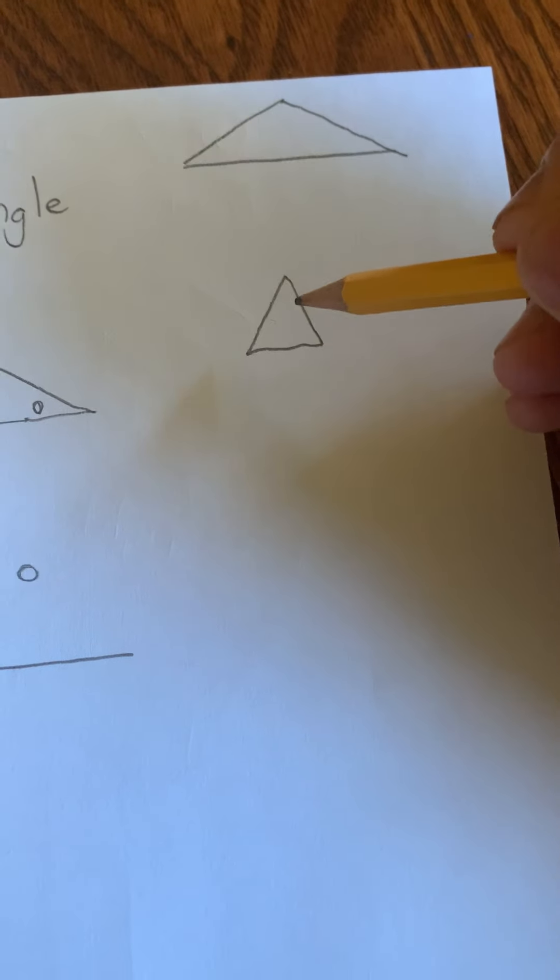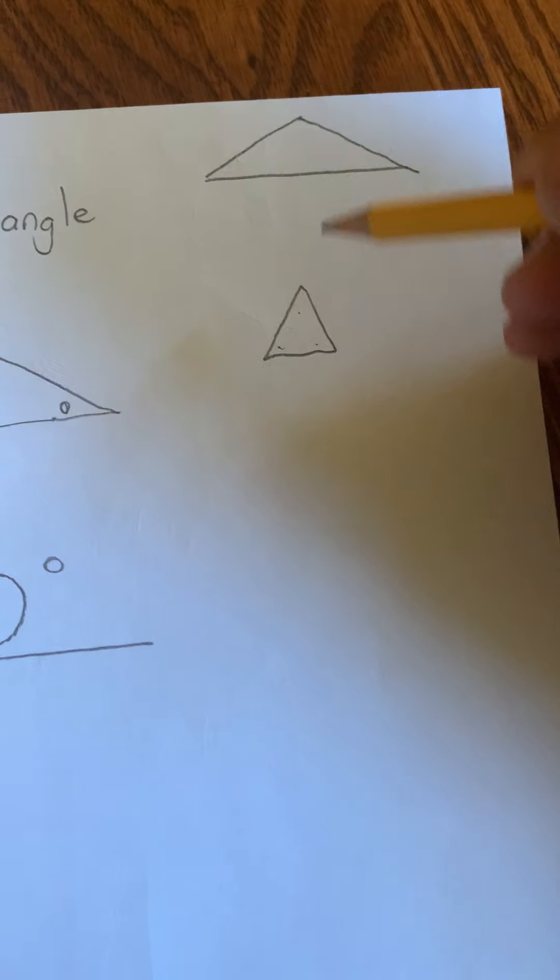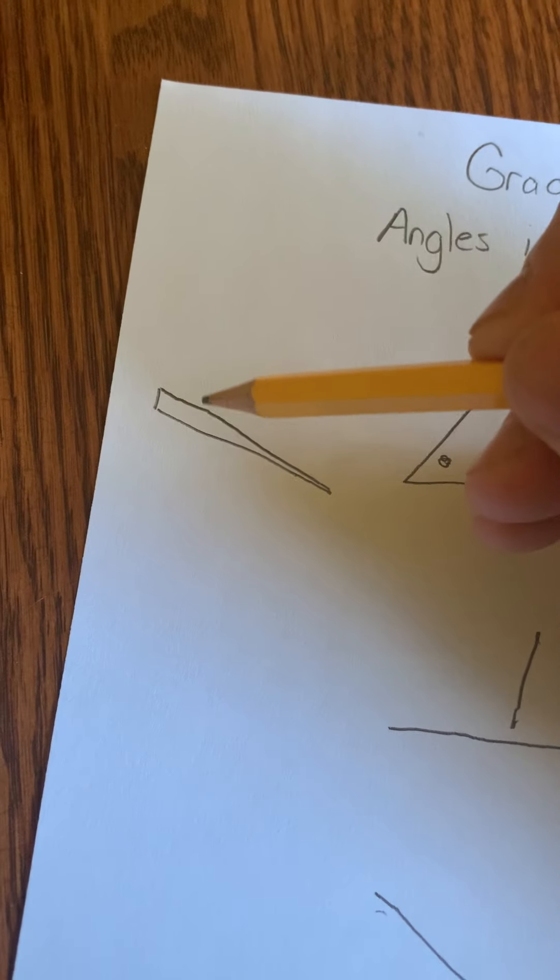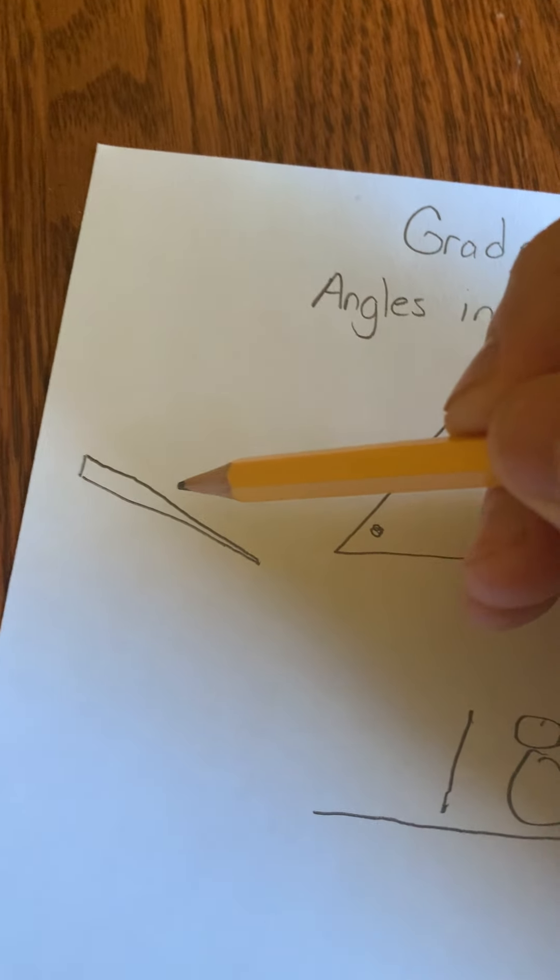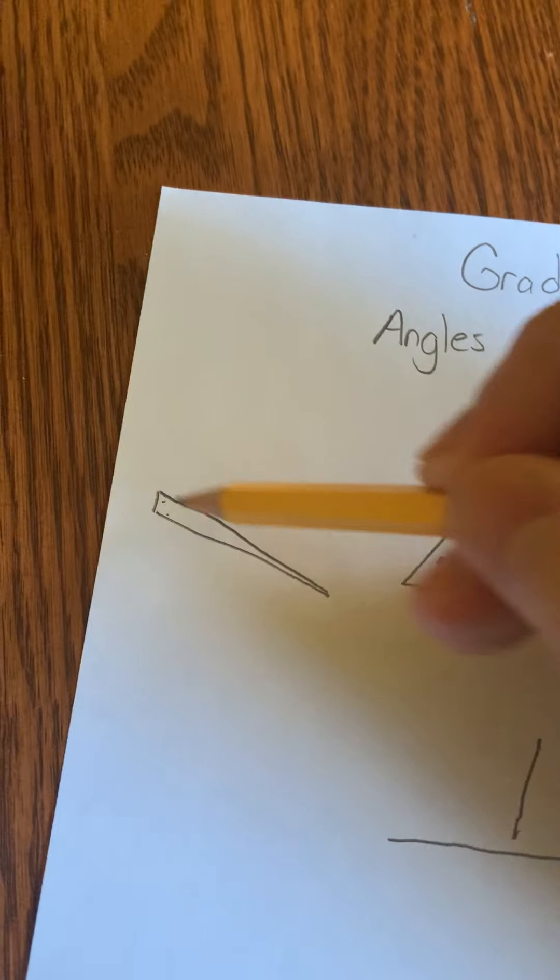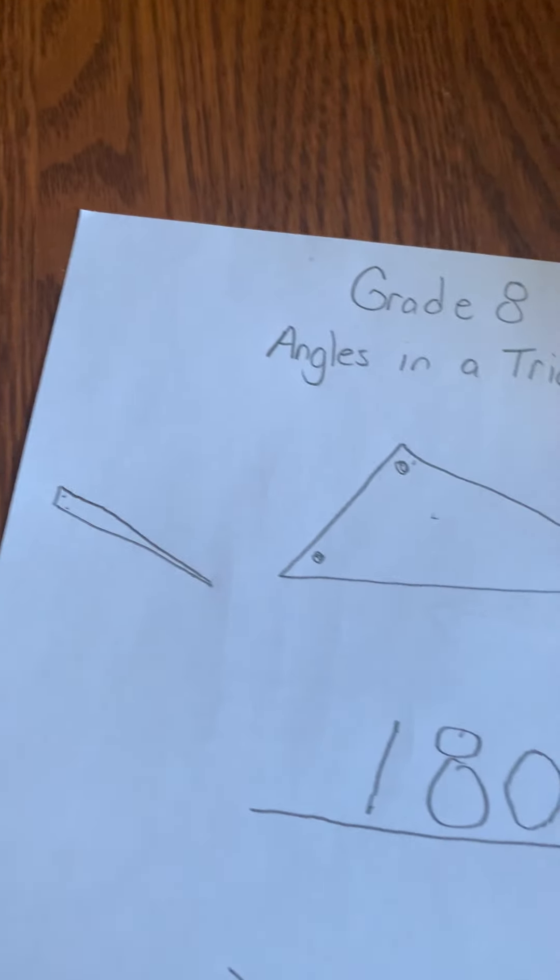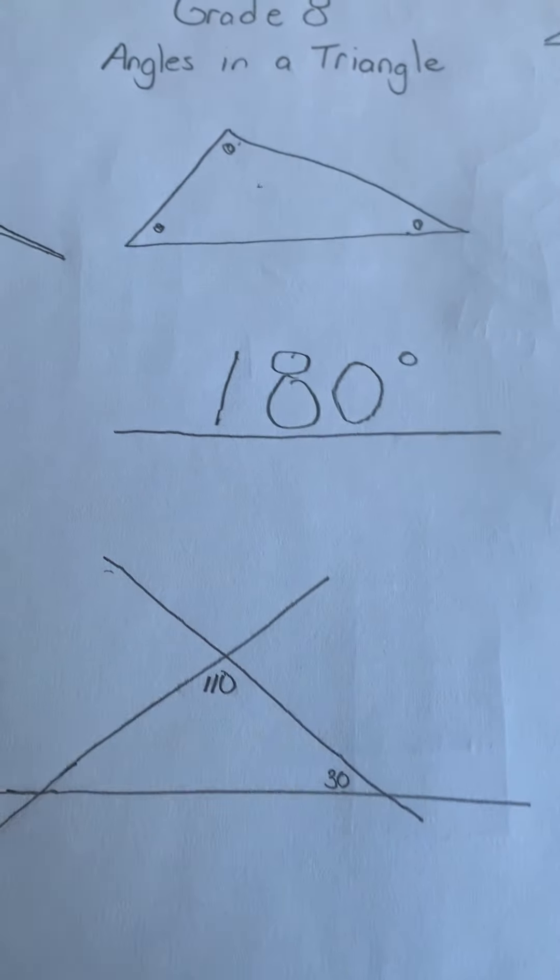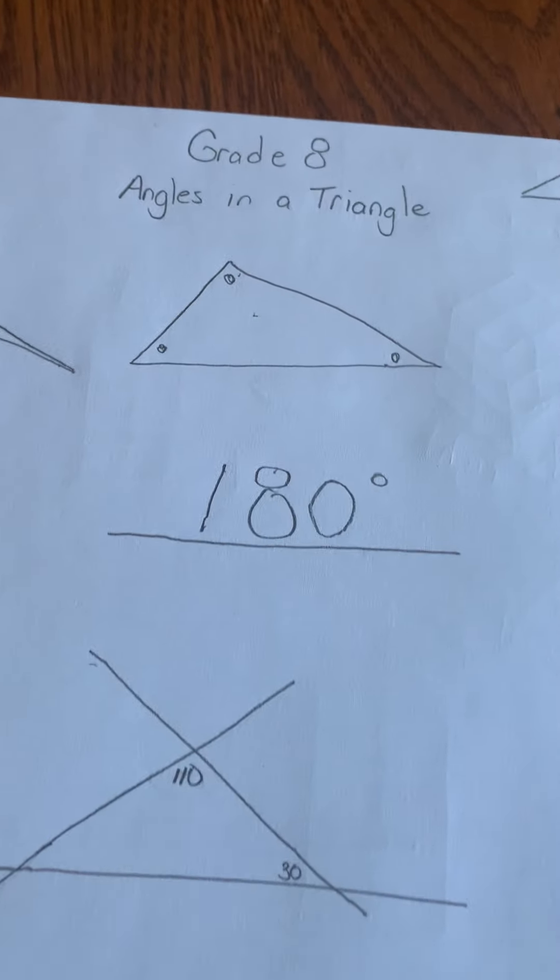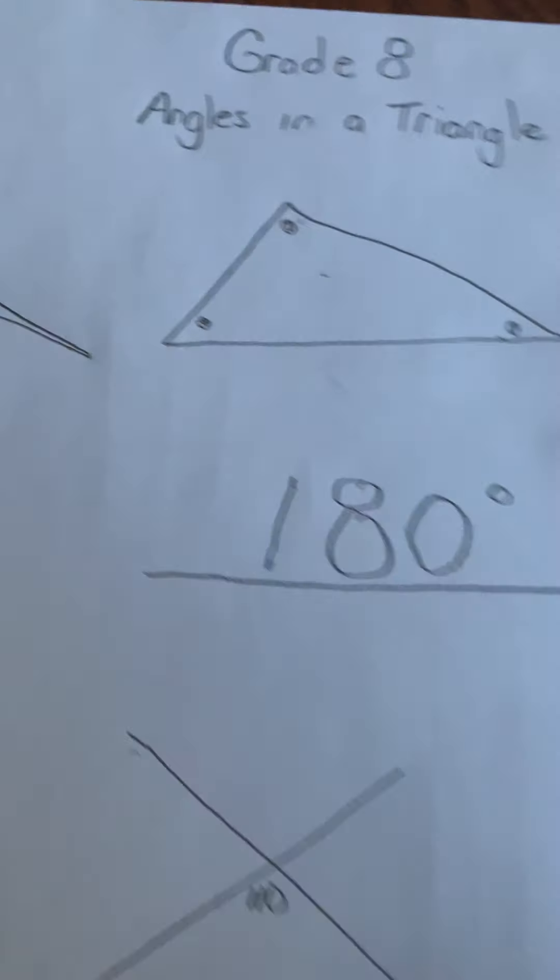And we'd look at that, and that would mean that this plus this plus this are 180. This plus this plus this are 180. It could go even to a weird triangle, which hopefully would have straighter lines if you used a ruler. And this plus this plus this would also equal 180. It's a universal relationship, kind of like pi is a universal value of 3.1415926.